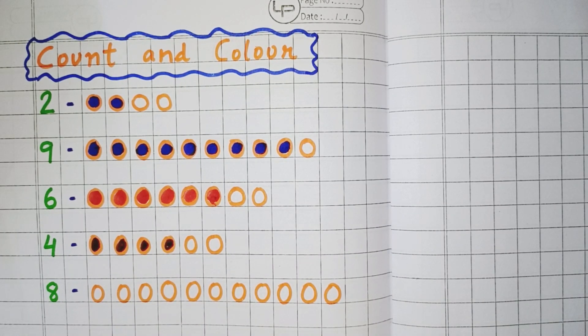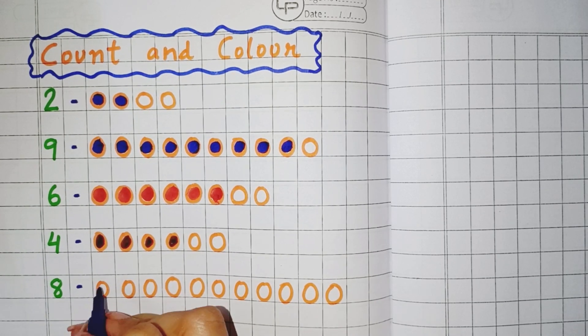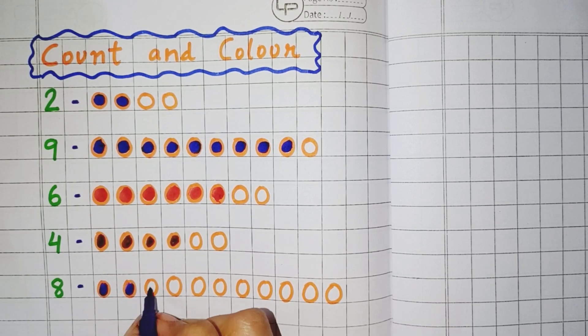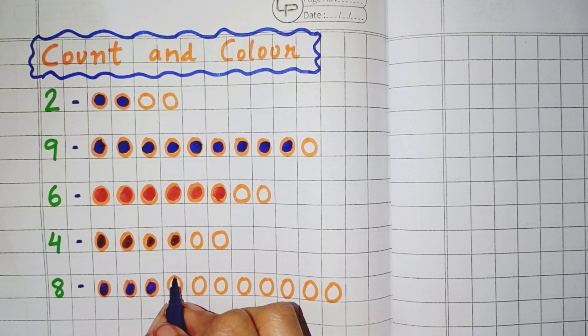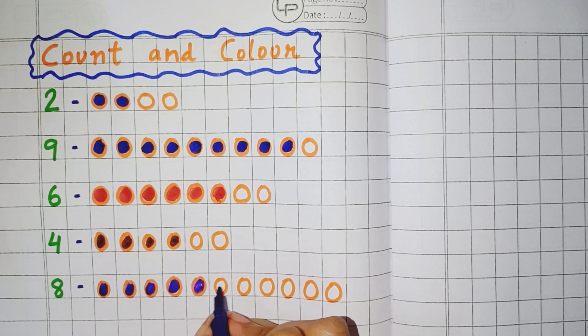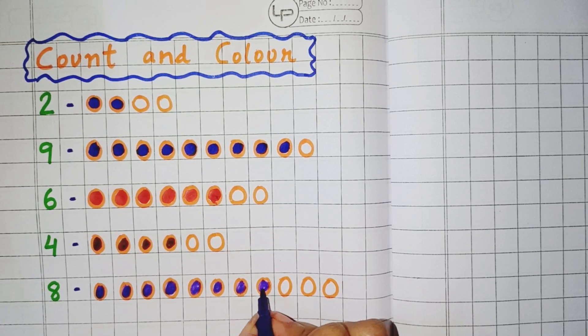Now the next number here you can see is 8. So you will color 8 objects. 1, 2, 3, 4, 5, 6, 7, 8.